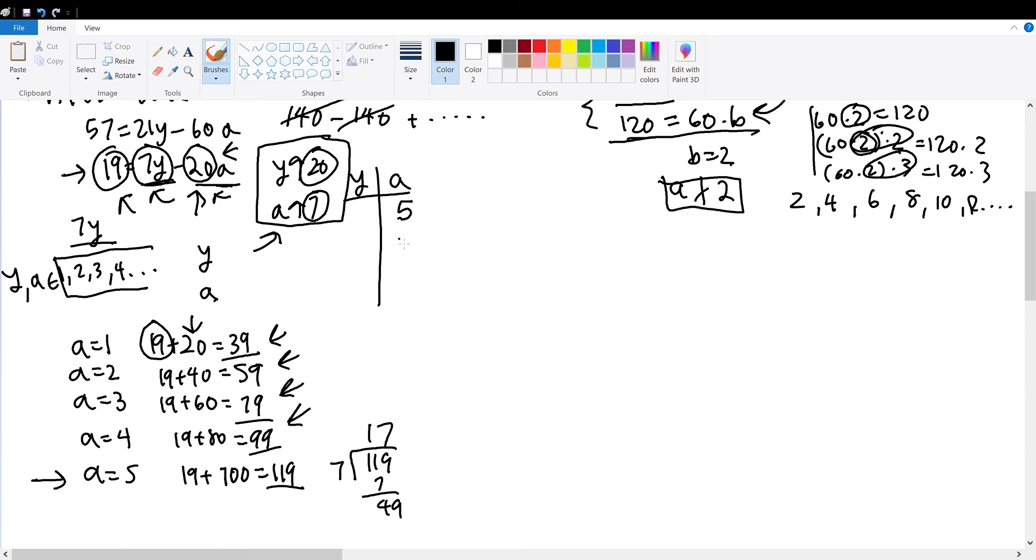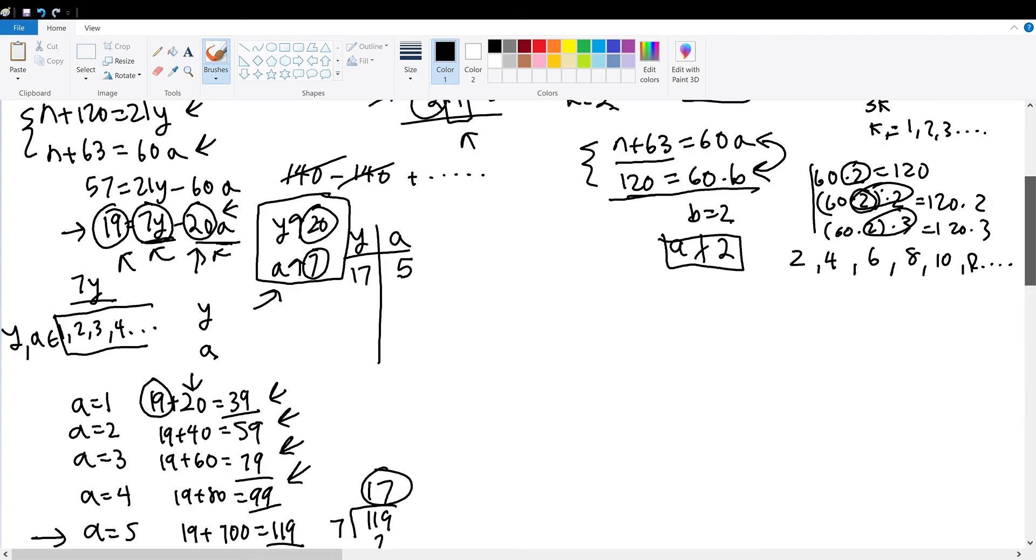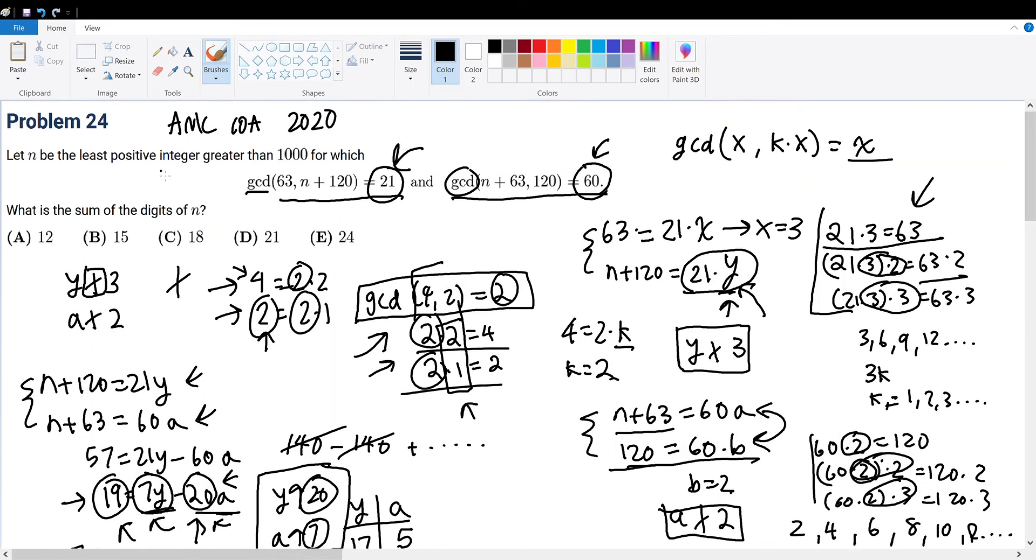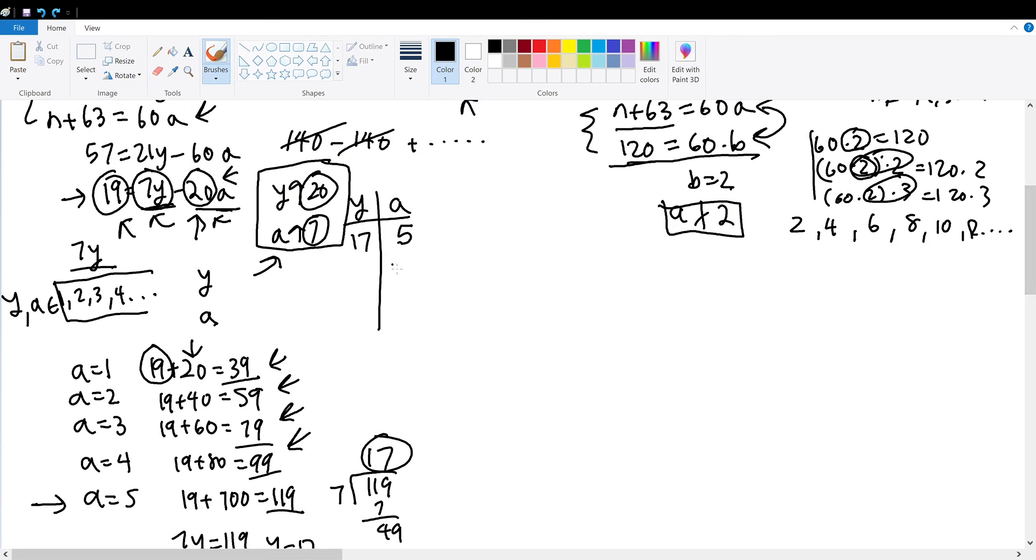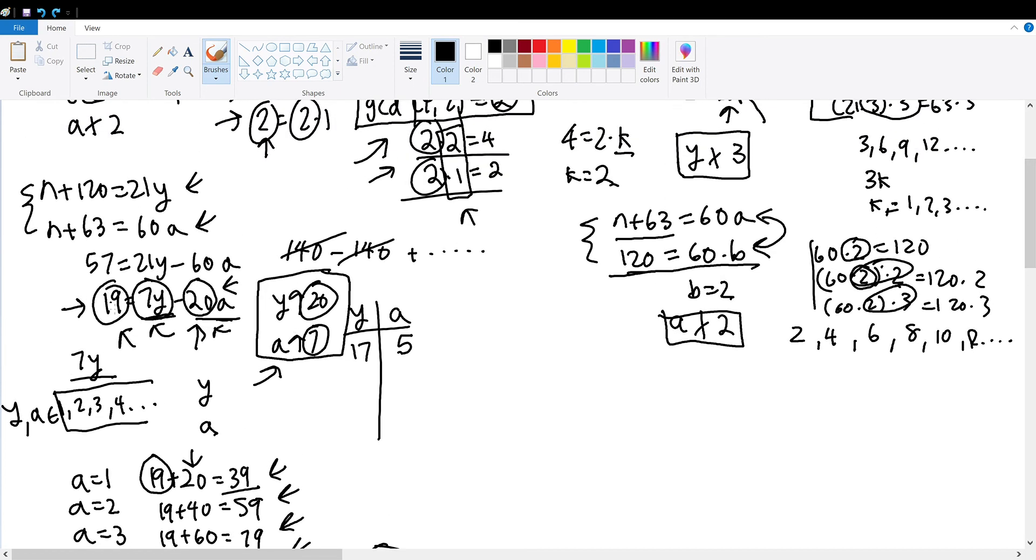So now we have a is equal to 5. We can put 5 here and we can solve for y. Well, since when a is equal to 5, 7y must be 119, y must be equal to 17 as solved right here. So y is 17. And now that we have this, you might be tempted to say that this is our answer. But is this really our final answer? Because remember, it says that n has to be a least positive integer greater than 1000. So the number resulting must be greater than 1000. So let's test if it actually matches such a criteria. So when y is equal to 17, we can just plug it into n plus 63 is equal to 60 times a. And we're trying to solve for n. So n plus 63 will be 60 times 5. 300 minus 63 is obviously not greater than or equal to 1000. So we must continue trying.